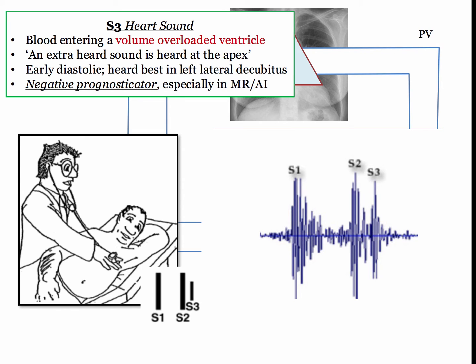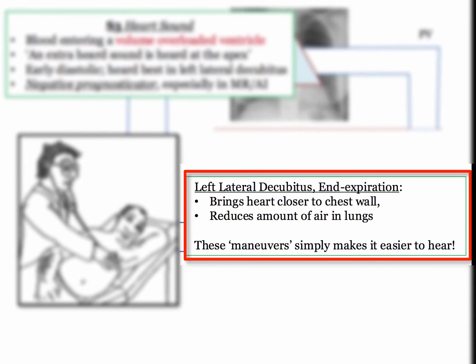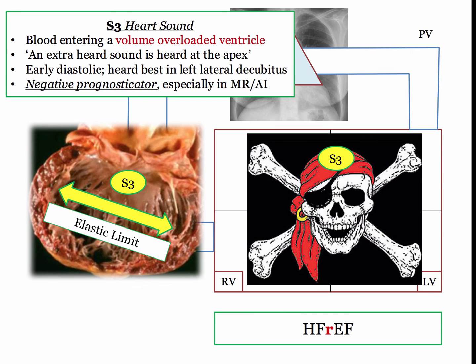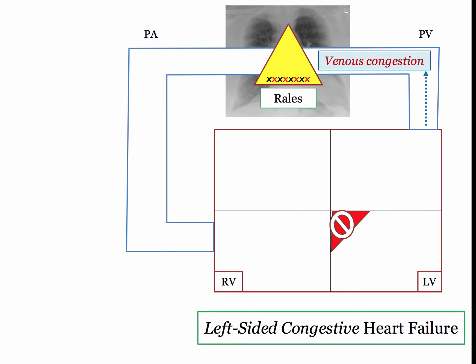The other S3 derivatives pertain to the clinical exam — they will be clinical descriptors rather than standalone questions. S3 occurs in early diastole and is heard best at the cardiac apex during end expiration, while the patient lies in the left lateral decubitus position. This maneuver brings the heart into closer apposition to the chest wall while the lungs are relatively deflated. S3 is also a negative prognosticator in patients with LV dysfunction, especially in the setting of regurgitant murmurs such as AI or mitral regurgitation.